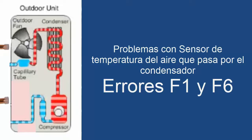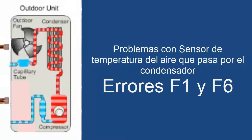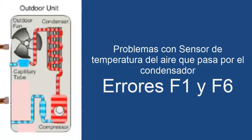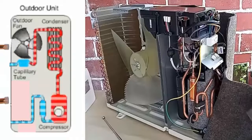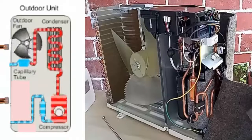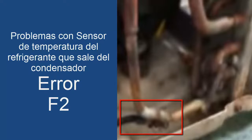To further increase the control of the system, we can even find a temperature sensor at the output of the condenser. This sensor measures the temperature of the liquid refrigerant to calculate the cooling capacity the refrigerant has in the condenser. When this sensor has a problem, the failure code the card generates is usually F2.